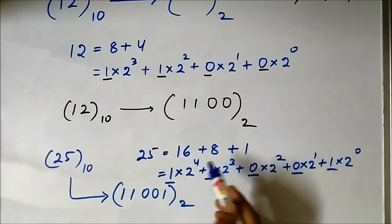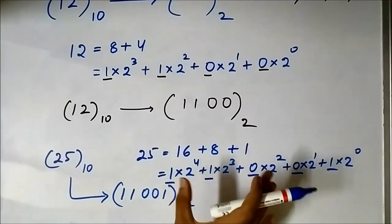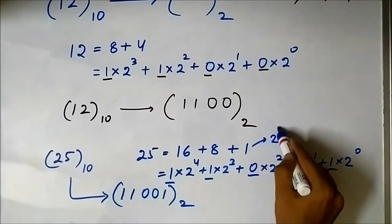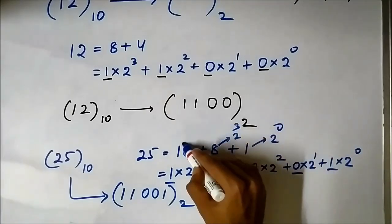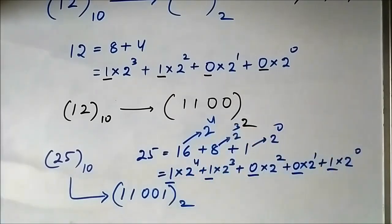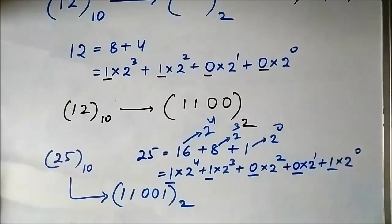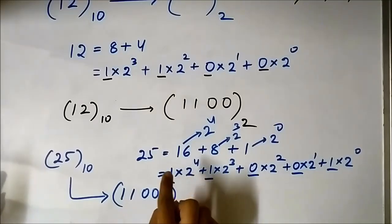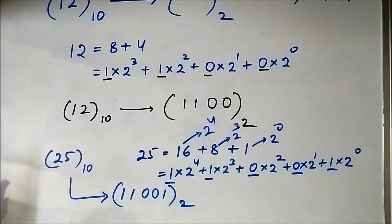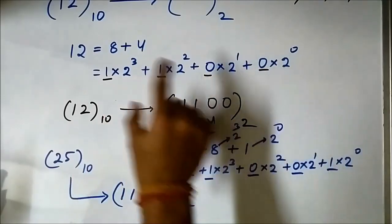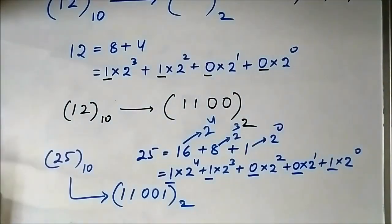The trick is always to arrange the given decimal number such that it appears as powers of 2 — 2 to the power 0, 2 to the power 3, 2 to the power 4 — with no repetition of any given power. Each power appears once, multiplied by 1 or 0. So to recap: 9 in decimal is 1001 in binary, 12 is 1100, and 25 is 11001.